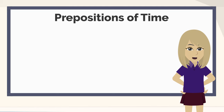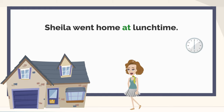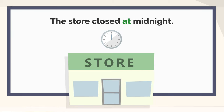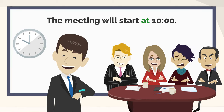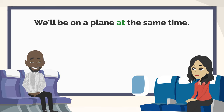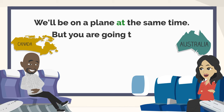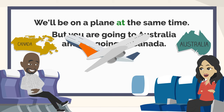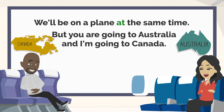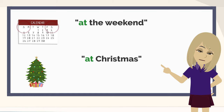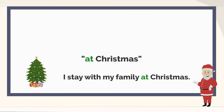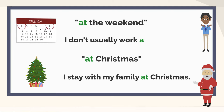Now let's look at some more examples. The meeting will start at 10 o'clock. We'll be on a plane at the same time, but you are going to Australia and I'm going to Canada. Note that in some varieties of English, people say 'at the weekend' and 'at Christmas'. For example: I stay with my family at Christmas. I don't usually work at the weekend.